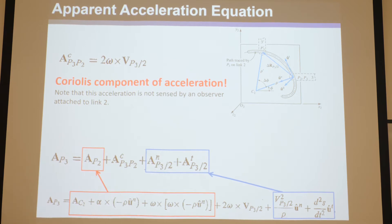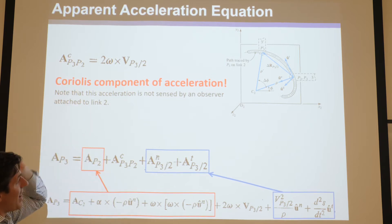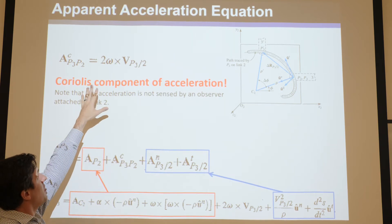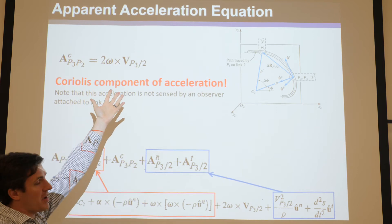So this is where acceleration gets really confusing. Not only does acceleration of a point have a tangential and a normal component — a centripetal and a tangential component — but when you start getting into apparent stuff where you've got links moving on top of other links, now you have a Coriolis term added to it. You just have to remember it's two times omega, which is the absolute angular velocity of the link that the thing's riding on, cross the apparent velocity vector VP3 slash two. The thing that's crazy about the Coriolis acceleration is there's an absolute velocity in there but an apparent velocity, so it uses both.